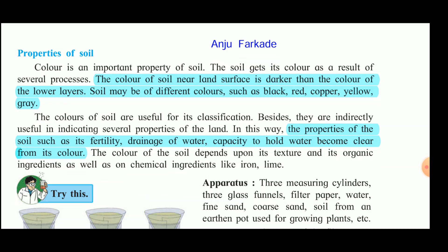Color is an important property of the soil. The soil gets its color as a result of several processes. The color of the soil near the land surface is darker than the color of the lower layers. Soil may be of different colors such as black, red, copper, yellow, and gray. These colors are useful for classification and indirectly indicate properties such as fertility, drainage, and water-holding capacity. The color of soil depends on its texture, organic ingredients, and chemical ingredients like iron and lime.